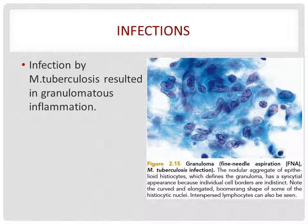The cells may also play an important role in diagnosing infectious disease. For example, tuberculosis, as shown in the image. Infection by Mycobacterium tuberculosis commonly results in granulomatous inflammation. The specimen shows aggregation of epithelioid histiocytes, which has a syncytial appearance because individual cell borders are indistinct.